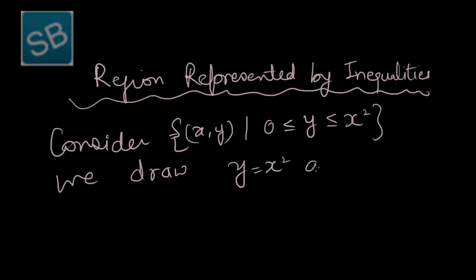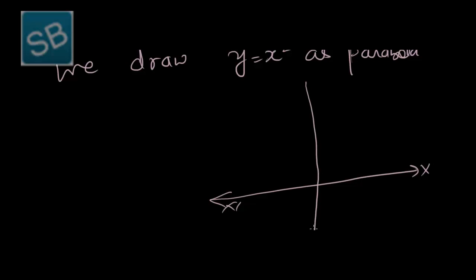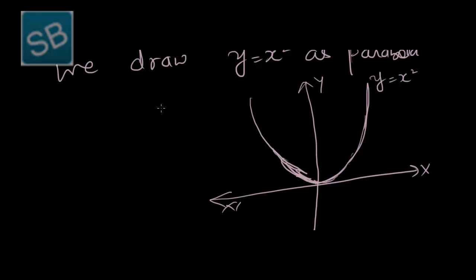We draw y is equal to x squared as a parabola. This is the x-axis and this is the y-axis. We draw a parabola passing through the origin — this is y equals x squared — and we draw a line AB.